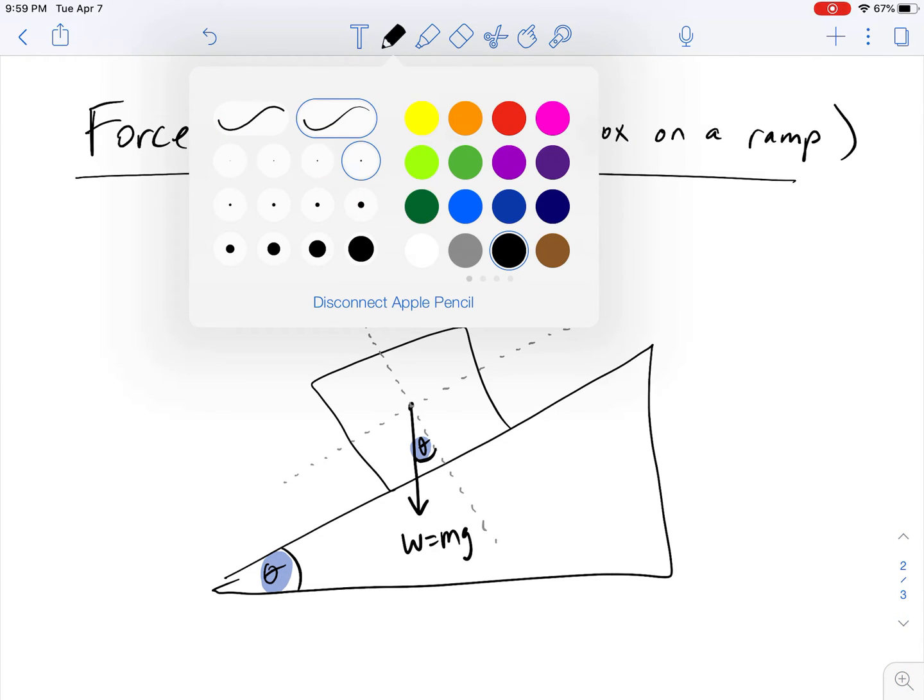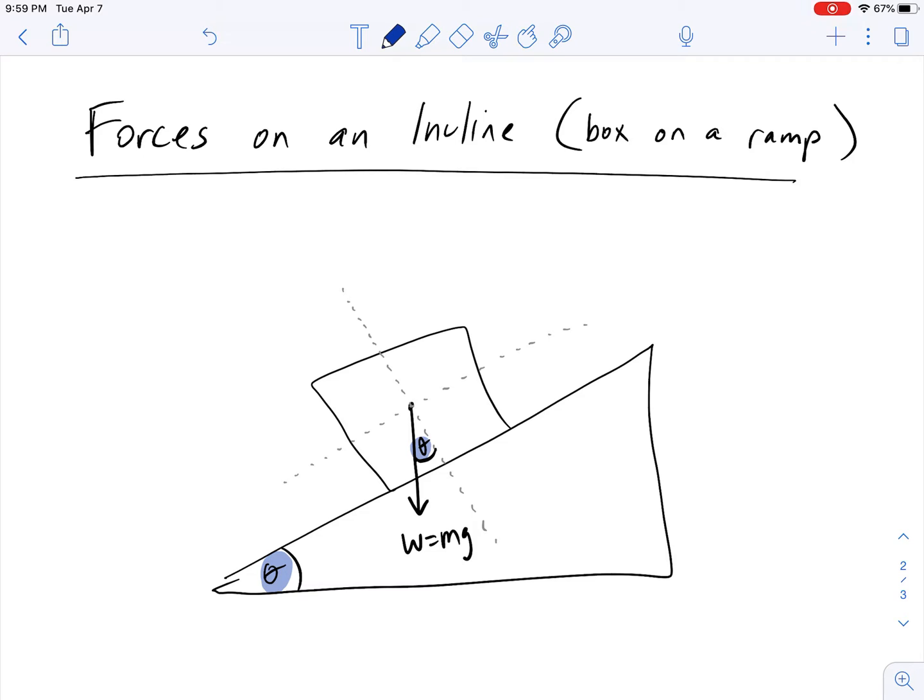And so anytime you have an angled vector, you need to break it into its x and y components. And so if we go ahead and do that, this right here, this straight down the y axis component, would be adjacent to the angle here. And so anytime you have your vector adjacent to, we use cosine. And so if our hypotenuse, which is the weight force, is m times g, we call this cosine theta mg. Actually, we call it mg cosine theta. I had that backwards. So we call that mg cosine theta.